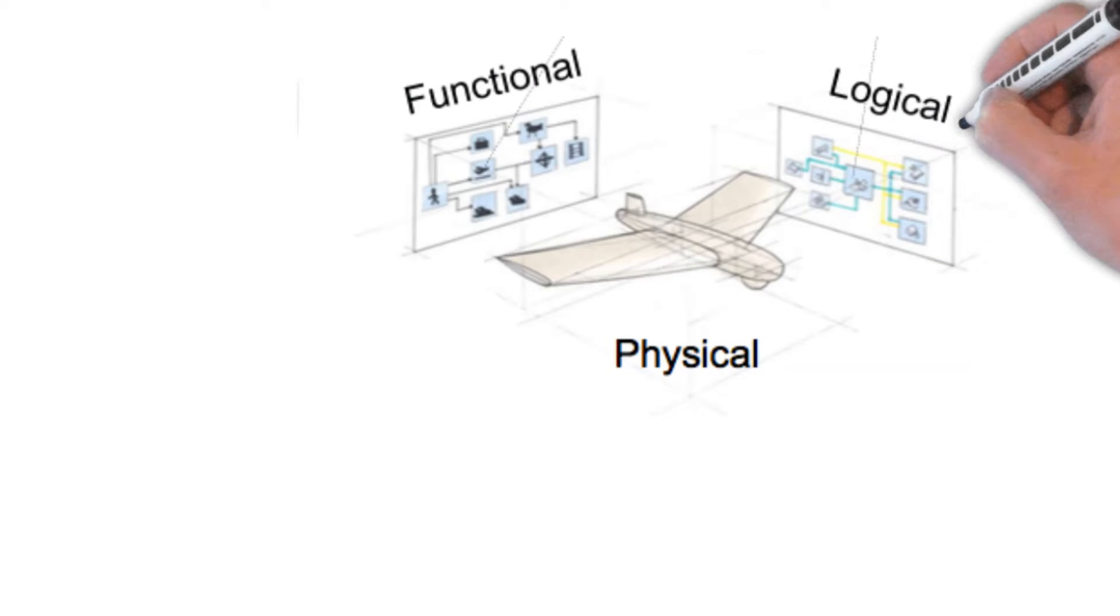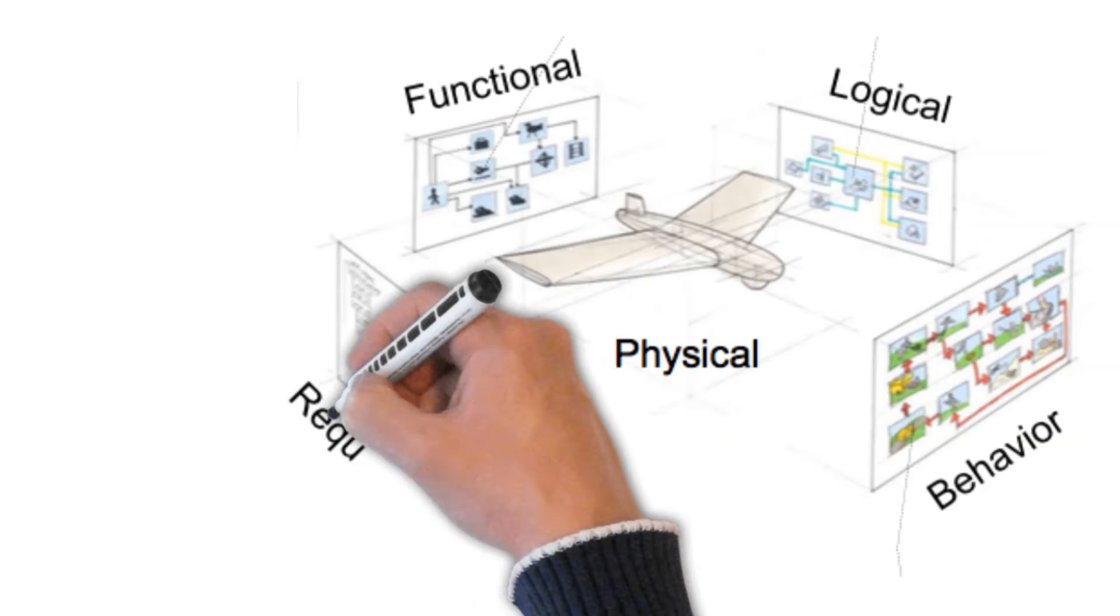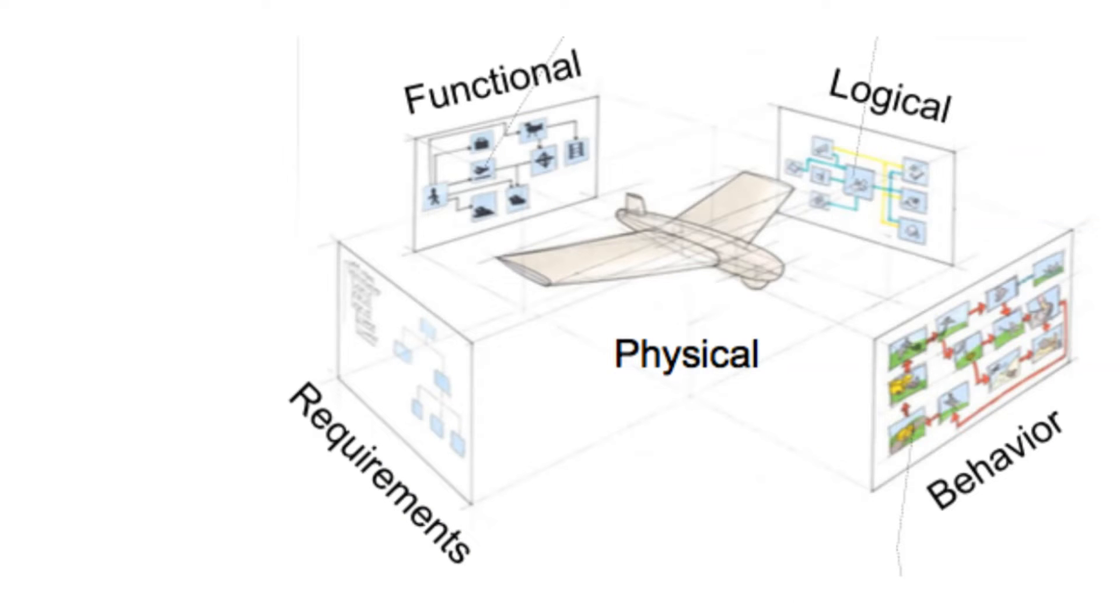Model-based systems engineers must create diagrams with a distinct purpose. For this example, functional, logical, behavioral, and requirement views are shown. The diagram purpose is self-explanatory.